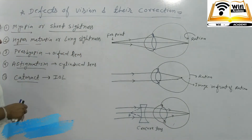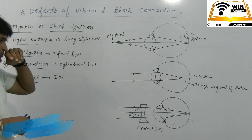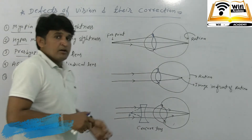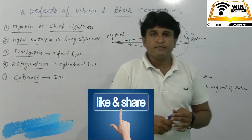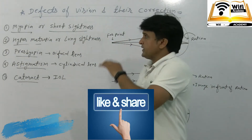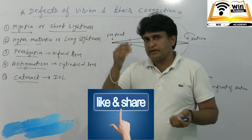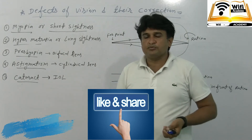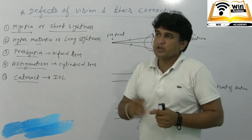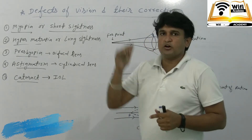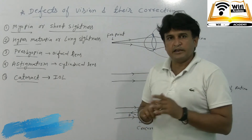First of all, we have to study about myopia, which is short-sightedness. In myopia, nearby objects are clear to us, but distant objects are not clear.